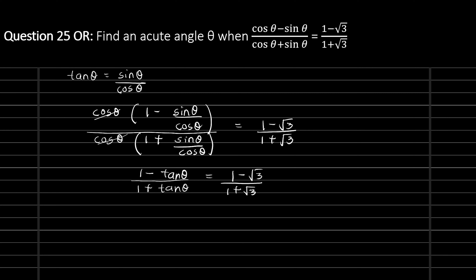Now if you compare carefully, you can observe there is a minus sign and root 3 on the right hand side, and tan theta on the left. So on comparing, we can get the value of tan theta equal to root 3.